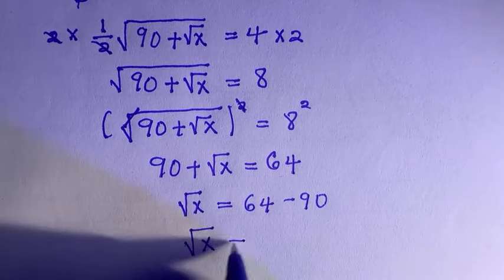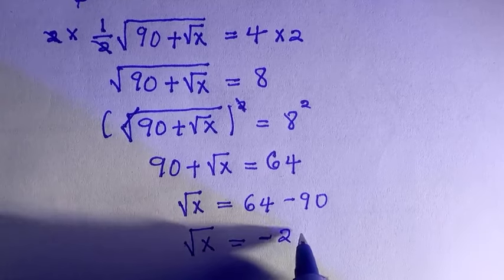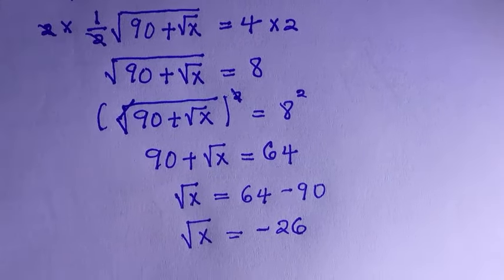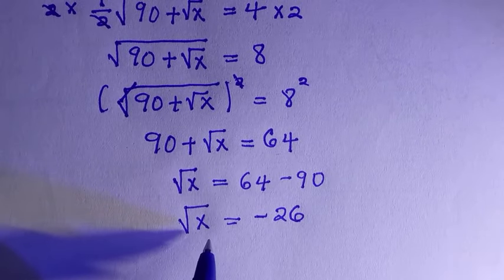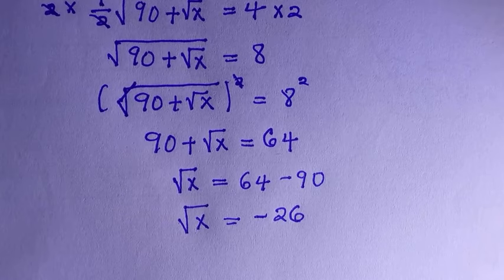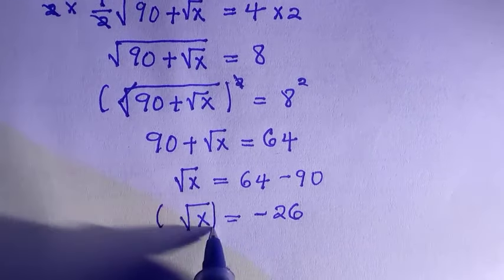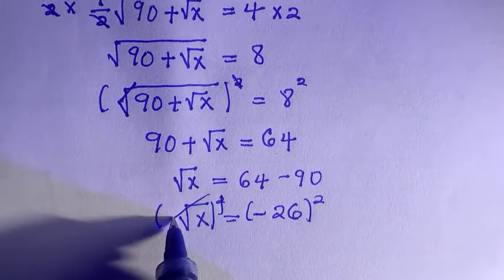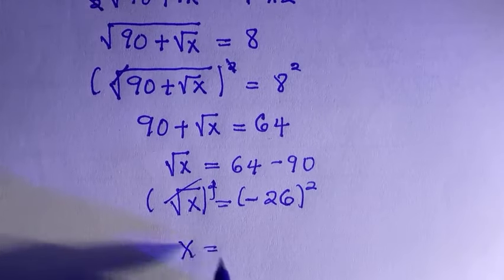By subtracting these two, we have root x equals to 64 minus 90, that is minus 28, minus 26 rather. Then we are going to take the square to the other side just to have the value of x. But here, if we take the root and substitute to the values in the question we are given, we are going to get the result. By taking the square of both sides, then we have x equals to...